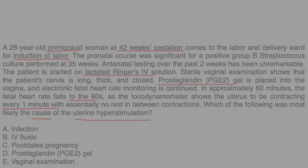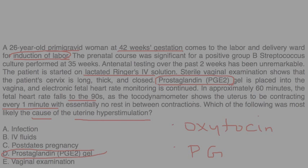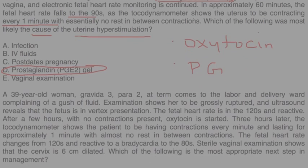The two most common medications used for induction of labor are oxytocin and prostaglandins. In this case, a prostaglandin was used, and one of the adverse side effects of using prostaglandins is uterine hyperstimulation. So that would be choice D.